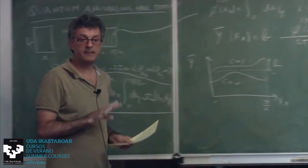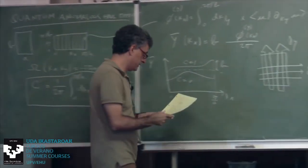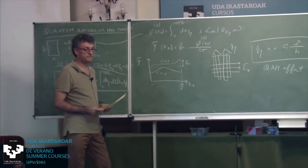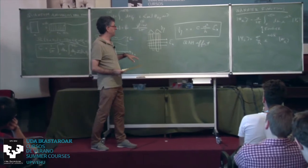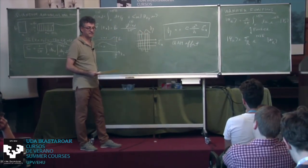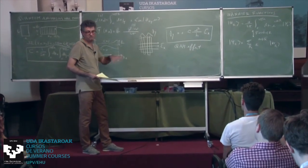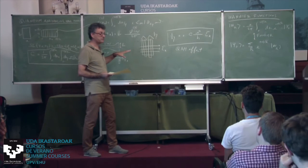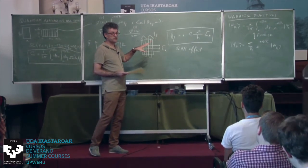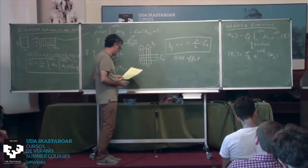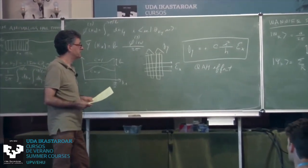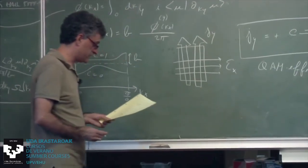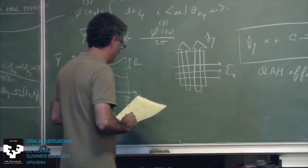In response to a question: if there were spin degeneracy there should be a factor of 2, so I'm assuming spinless electrons — as in the Haldane model, which is spinless. In real systems you typically have spin-orbit coupling and broken time reversal, so the bands split and you don't have spin degeneracy anyway. Let's assume spinless electrons.